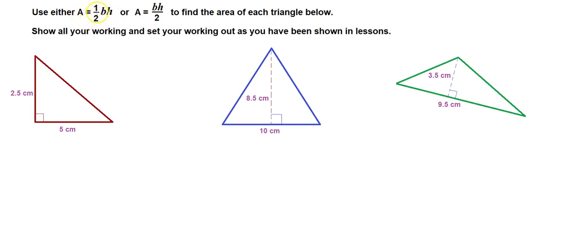We use one of two formulas: A equals half times base times height, or A equals base times height divided by 2, to find the area of each triangle below.